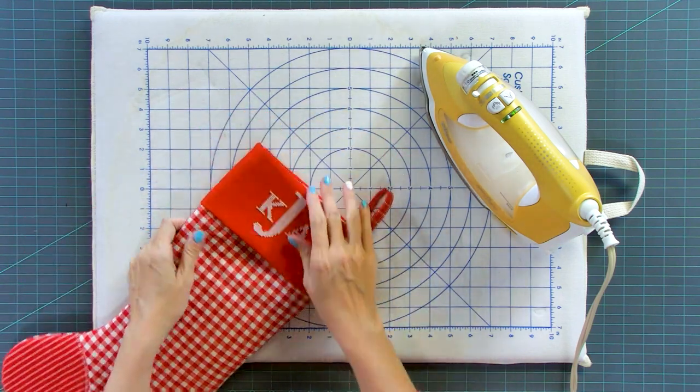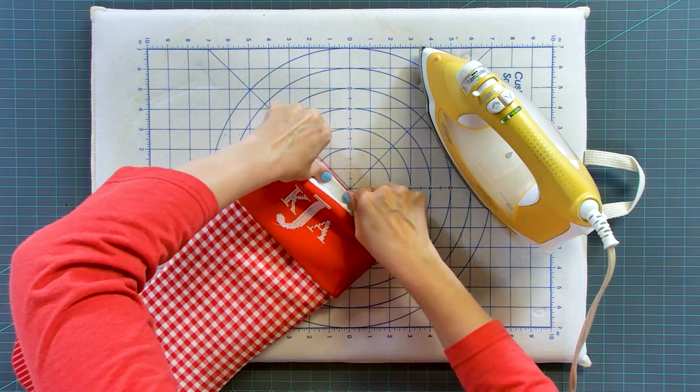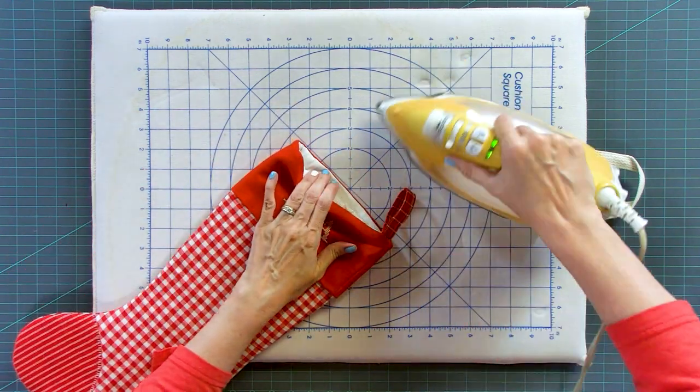And then what you'll do is you'll just press right here cause you want this white and red to be pressed right there. So you'll just press all the way around.